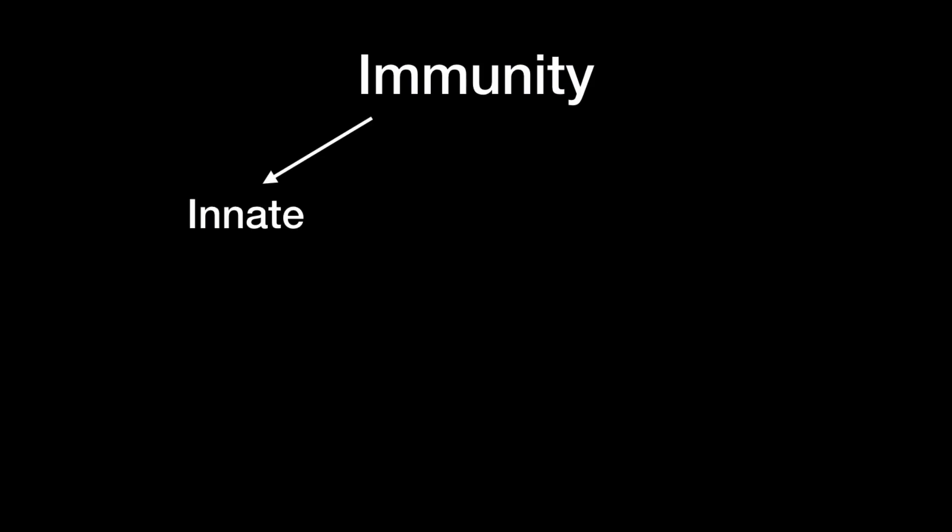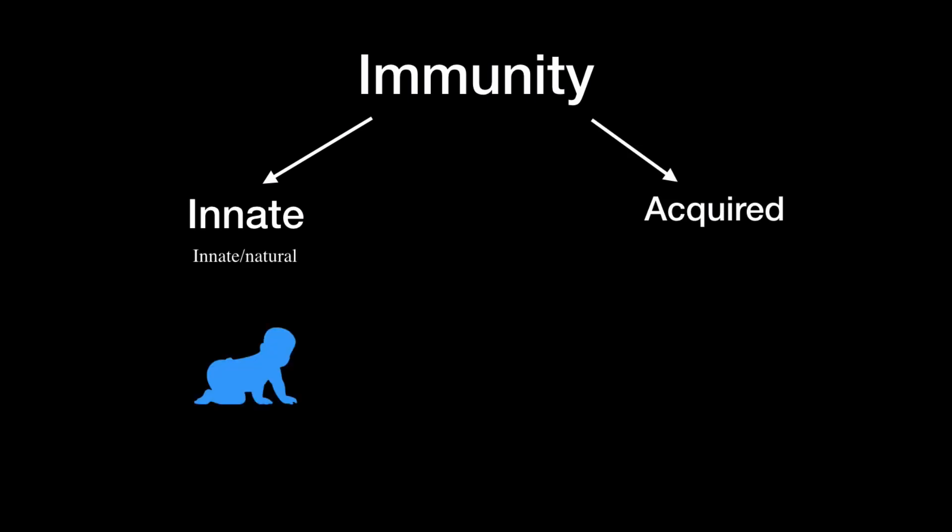Hello and welcome to another video. In this video I'm going to talk about acquired immunity. The immune system uses two main strategies to defeat any type of unwanted invaders. One of them is called the innate and another one is called acquired. The innate immune system is mainly present since birth and therefore sometimes also called the natural immune system. The acquired however forms during a person's lifetime and is therefore sometimes also called adaptive.